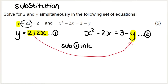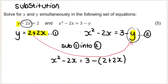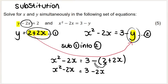Substituting equation 1 into equation 2: x squared minus 2x equals 3 minus, in brackets, 2 plus 2x. Expand: multiply the negative into the bracket to get negative 2 minus 2x. Now I have x squared. As soon as I see x squared I know it's a quadratic — make it equal to zero. The x terms cancel: negative 2x plus 2x equals 0. And negative 3 plus 2 equals negative 1. So x squared minus 1 equals zero.